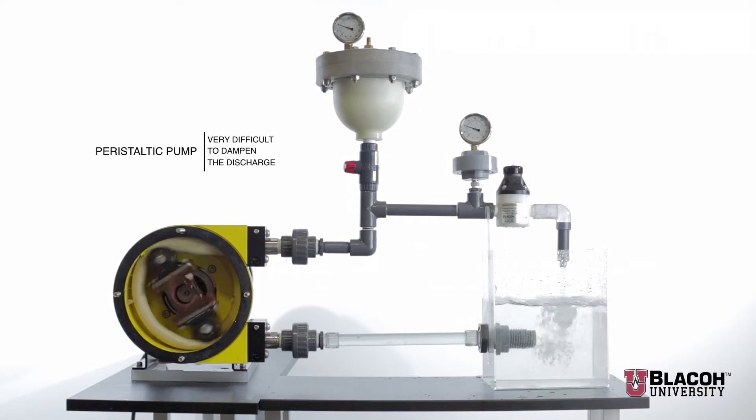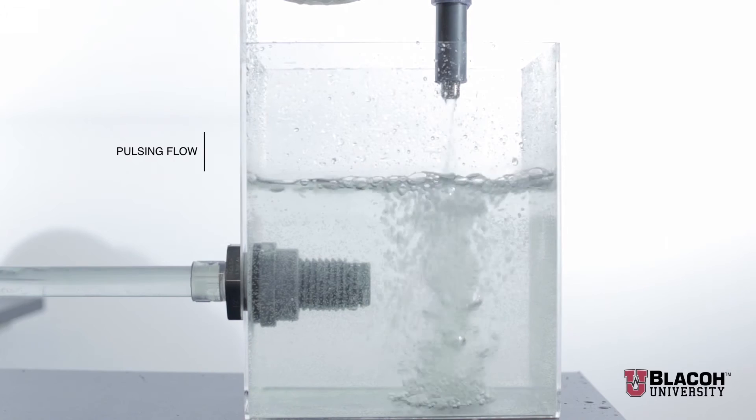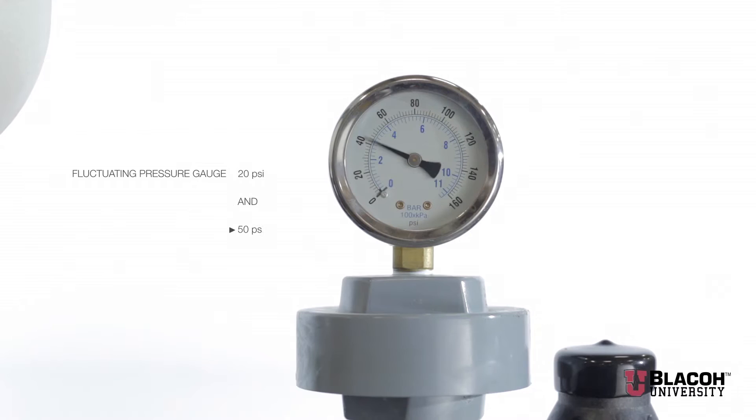You will notice that the flow is pulsing as it comes out of the discharge and that there is a very large swing in pressure on the pressure gauge. The flow actually stops at every rotation of a roller shoe.